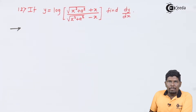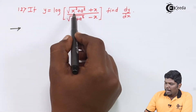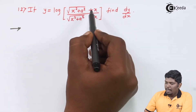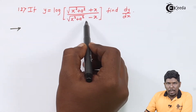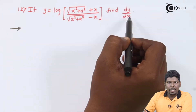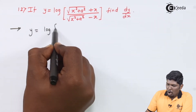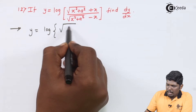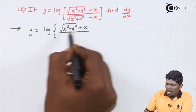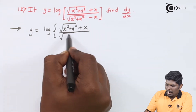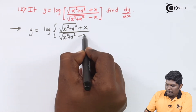In problem number 12, we have: if y is equal to log of under root x squared plus a squared plus x, upon under root x squared plus a squared minus x, find dy by dx.